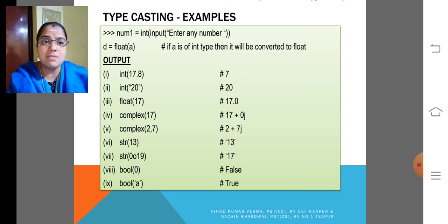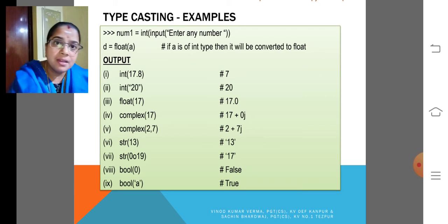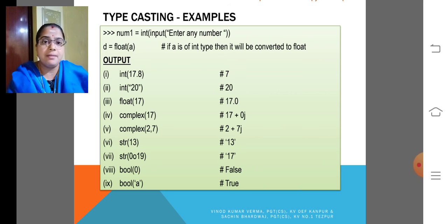Second one is for the imaginary. So, 2 plus 7j. String 13. It becomes 13. That is string 13. 13 integer become string 13.